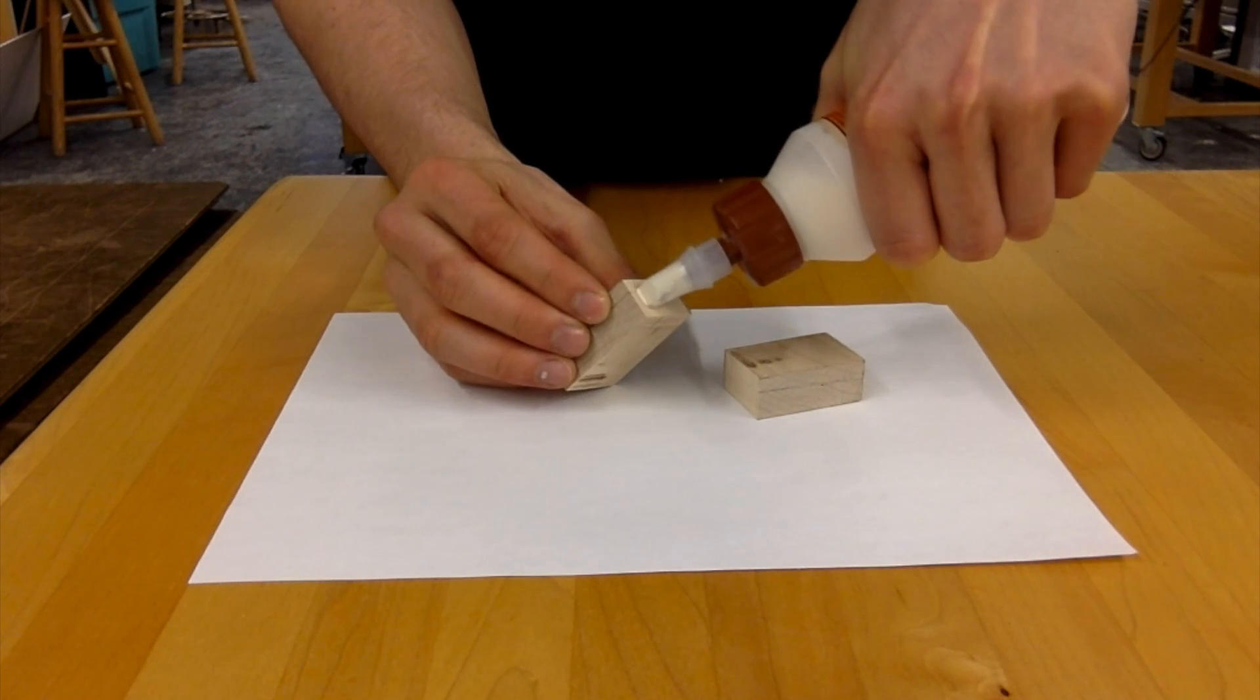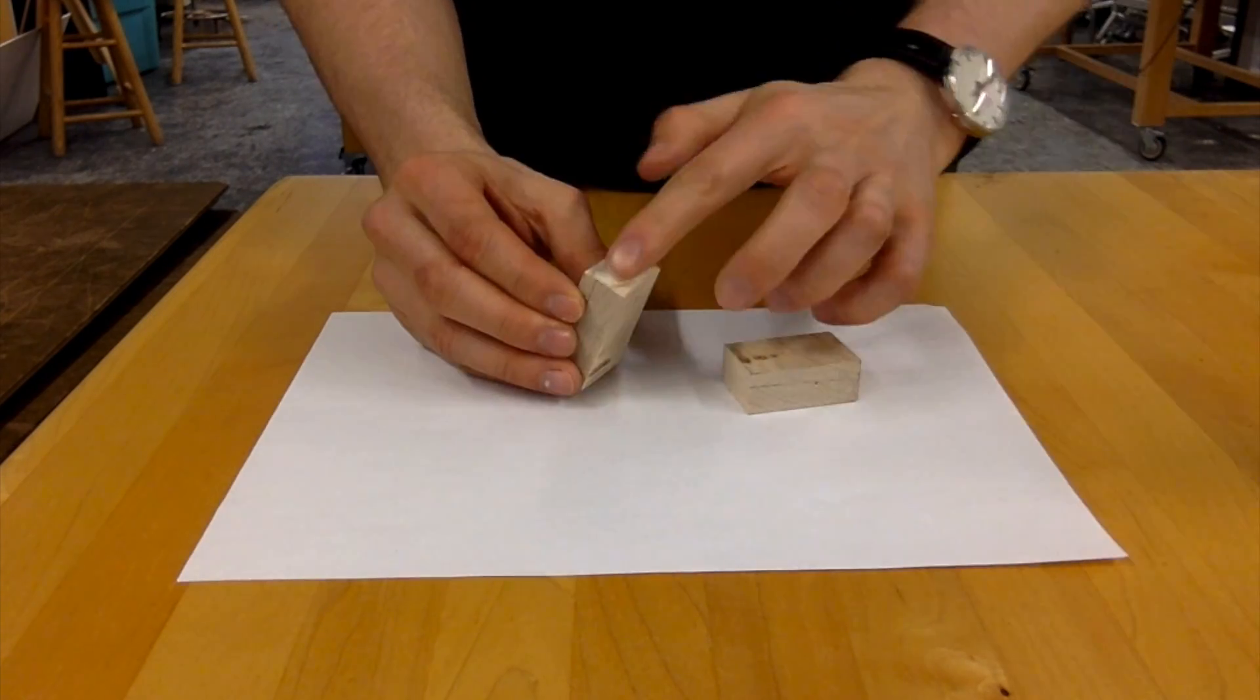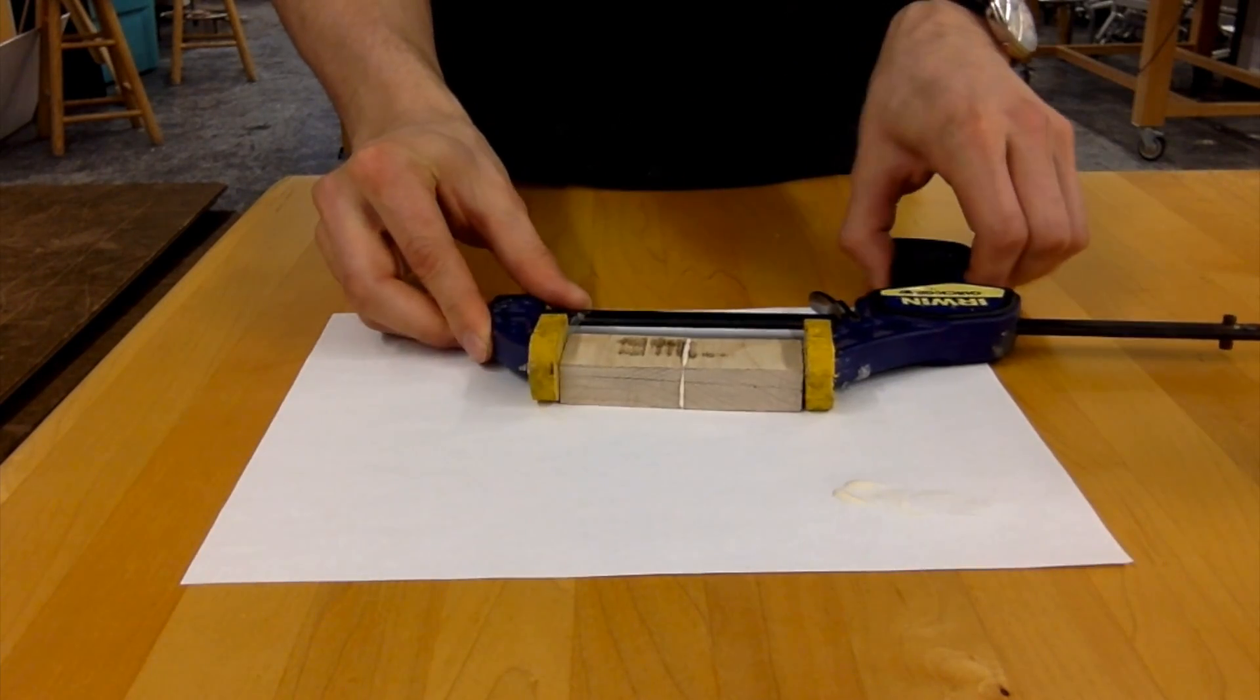So let's get started on these samples. We're going to apply the glue, spread it out evenly, and then clamp it.